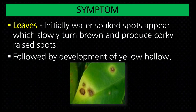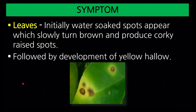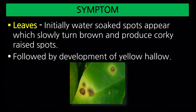On leaves, initially water-soaked spots appear which slowly turn brown and produce corky, raised spots, followed by development of a yellow halo. In Hindi: पहले water-soaked spots आते हैं, बाद में brown color के हो जाते हैं, surface उभरा हुआ हो जाता है, और spots के चारों ओर yellow halo present होता है। When infection is very severe, defoliation occurs — the leaves fall off.